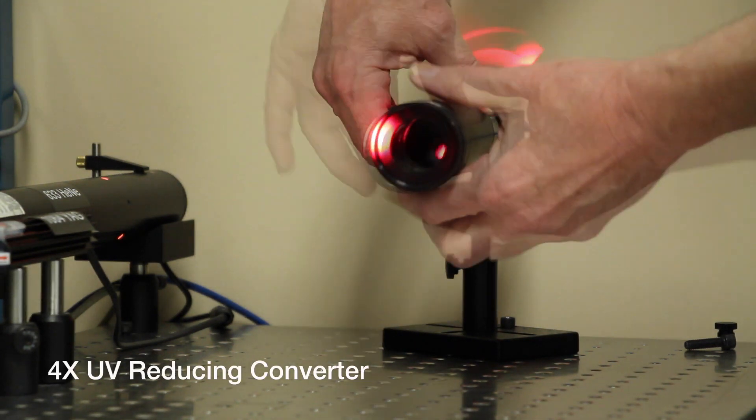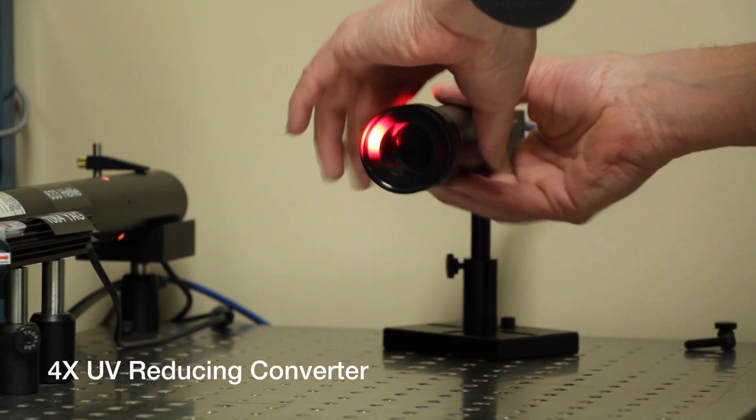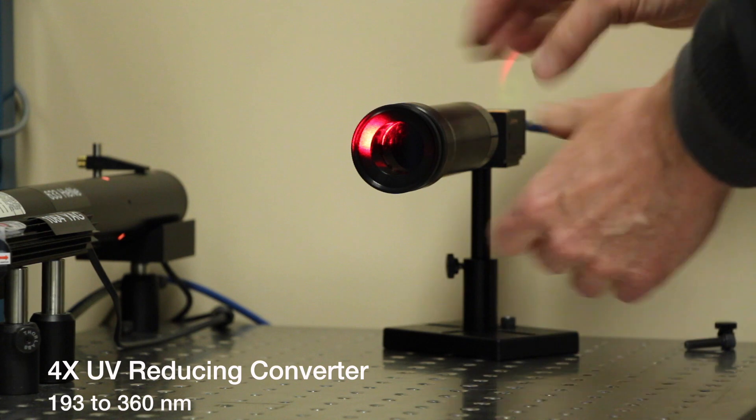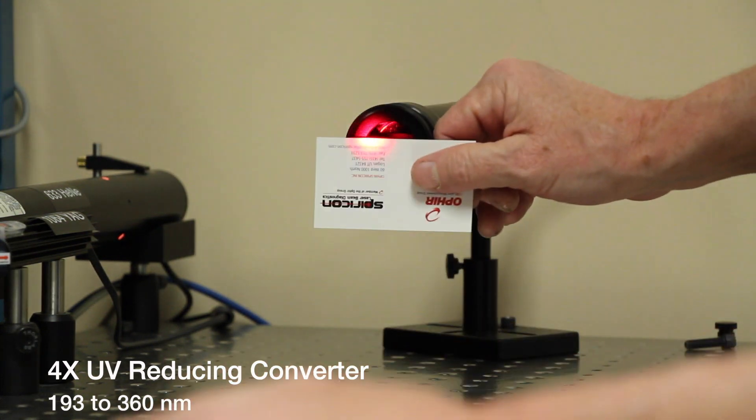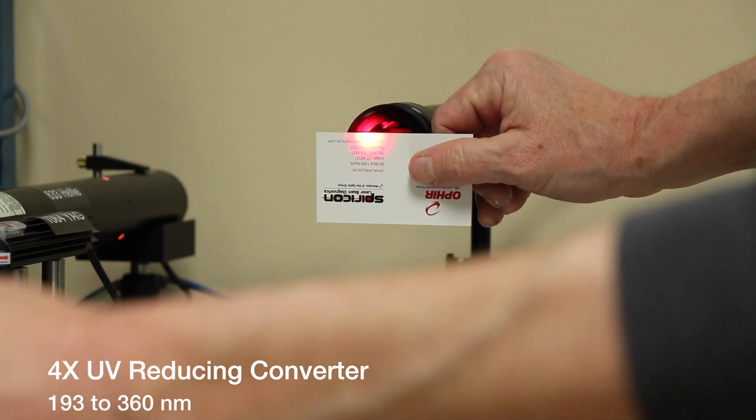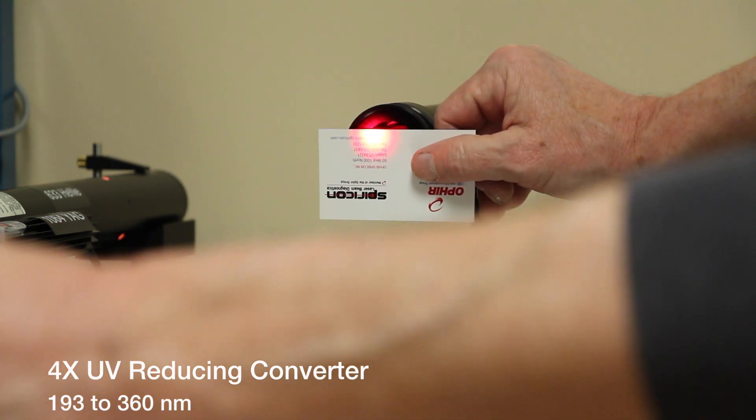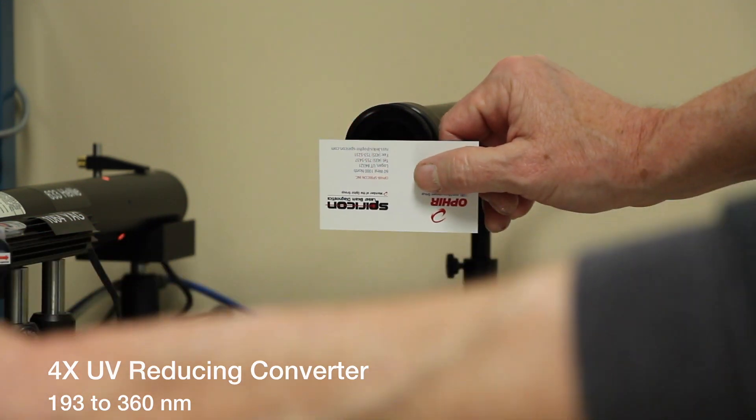The 4x UV reducing converter operates in the spectral range of 193 to 360 nanometers. The effective aperture is four times the active area of the camera that is used, up to a maximum aperture diameter of 30 millimeters.